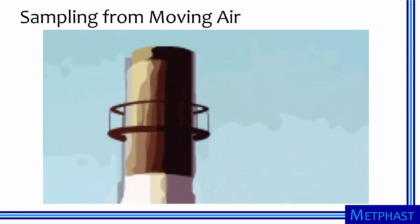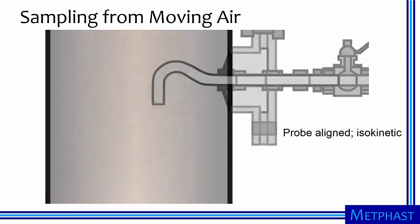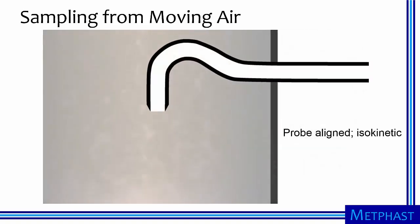Air is pulled from the moving airstream with a sampling probe. Representative sampling is achieved when the probe is aligned with the airflow and the velocity of air entering the probe is equal to the velocity of air in the stack.